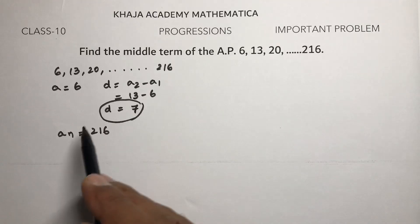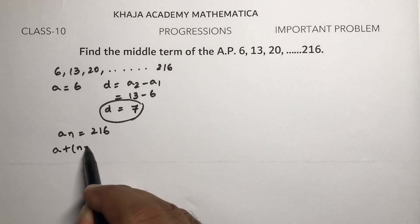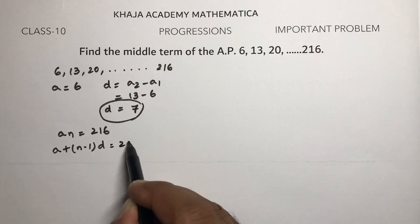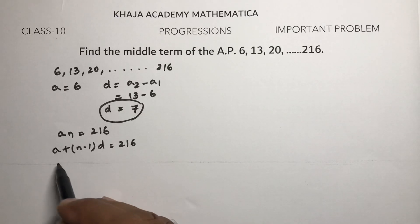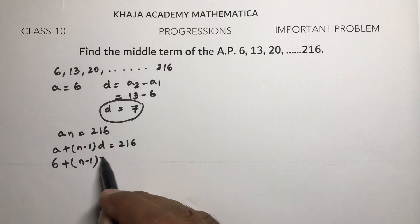First we'll find the number of terms, then we'll find the middle term. So a + (n-1)d = 216. Substituting the values, 6 + (n-1)×7 = 216.